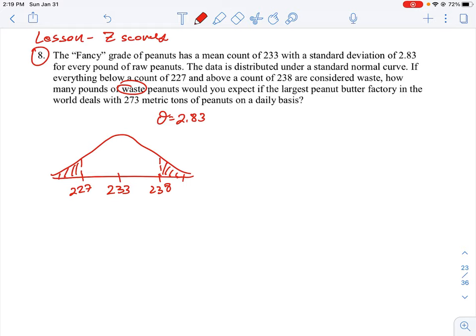So let's work that through here. I could just use in one step: normal CDF equal to 227 to 238, mean of 233, standard deviation of 2.83, and that should equal 0.9446, approximately 94.946%.